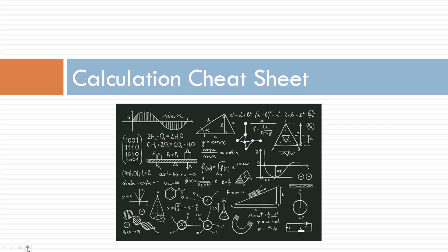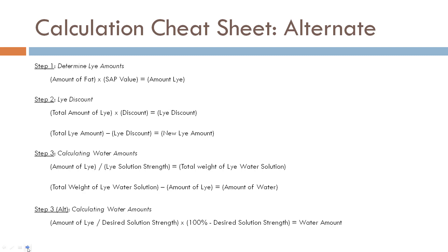Here is your cheat sheet — these are your formulas for determining your whole recipe. Step one: determine your lye. Step two: apply your lye discount. Once you know your lye discount, you can set aside the step one amount because we now have our new lye amount. Step three: calculate your water. There are two alternatives — use whichever formula makes sense for you.